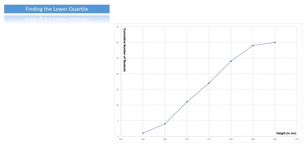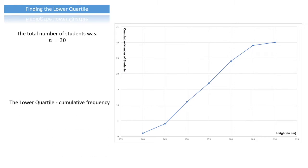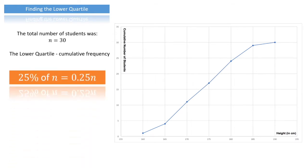To find the lower quartile the starting point is the same. We note that n equals 30. The key thing to remember for the lower quartile is that it corresponds to a cumulative frequency of 25% of n, which is 0.25 times n. In this case 0.25 times 30 is 7.5, and we can label that on our graph just as we did previously.